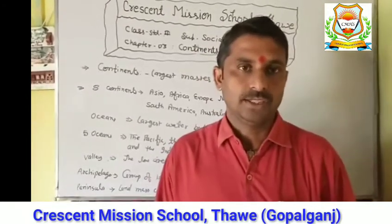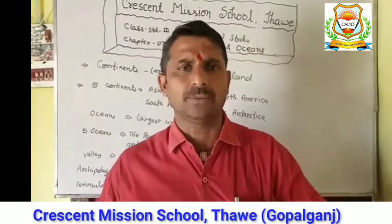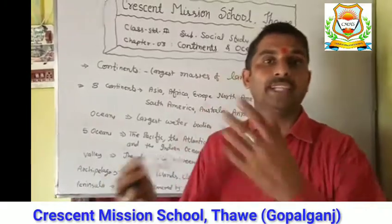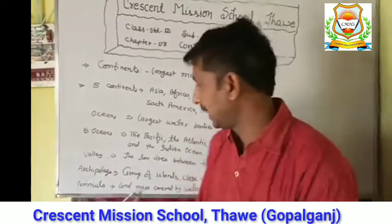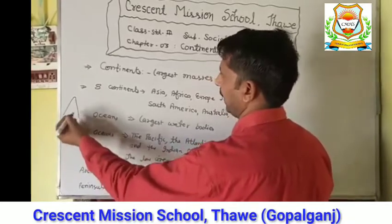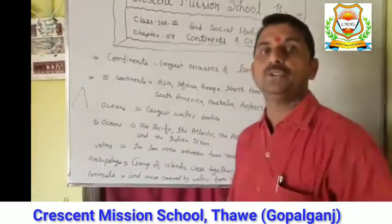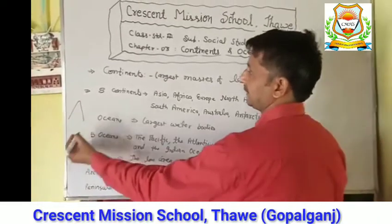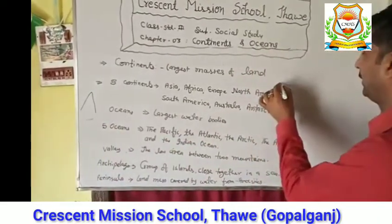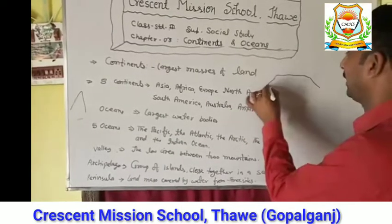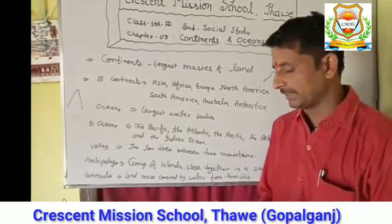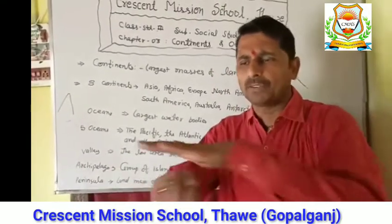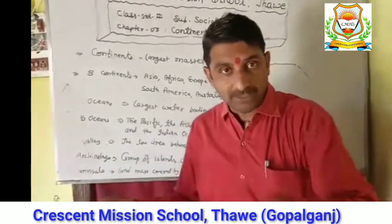When we talk about land features, we talk about the mountain — a highland with a pointed peak at the top. Then there is the plateau, which is very high but flat on top. And then there is the plain, which is flat and low land.